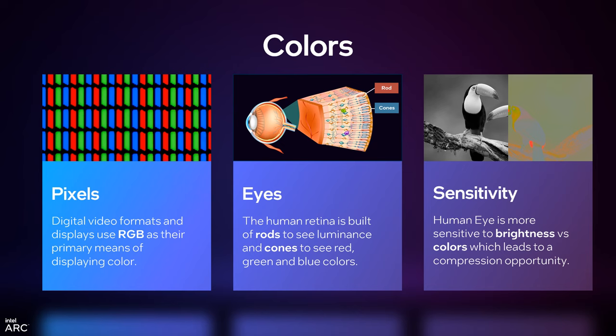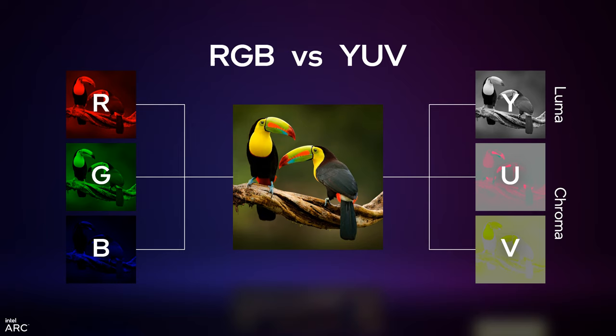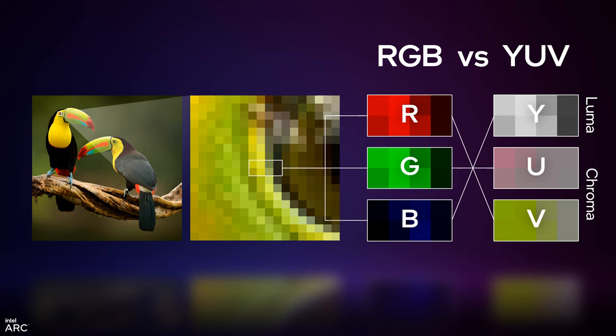Typically you think of red, green, and blue making a pixel, but you can also think about it as brightness and darkness and something called chroma. It's just a different way of recording it — completely lossless. If you did RGB versus YUV — YUV being the color mapping for luma and chroma — you can encode it in either RGB or YUV with no loss of information.